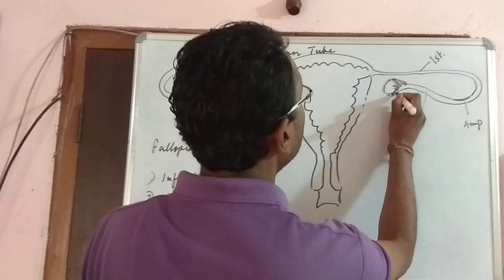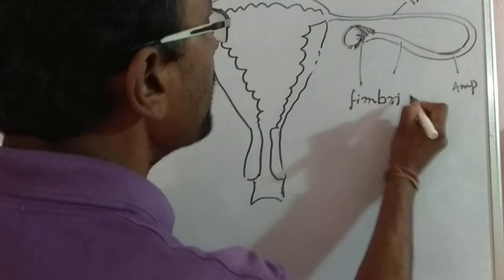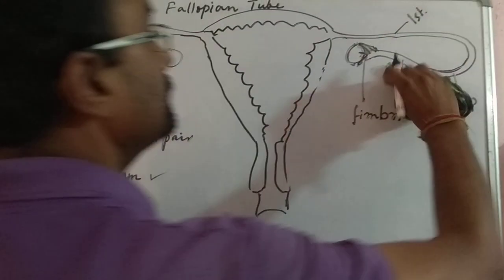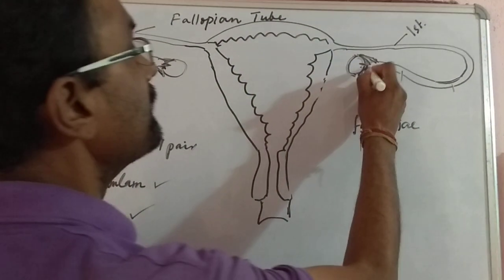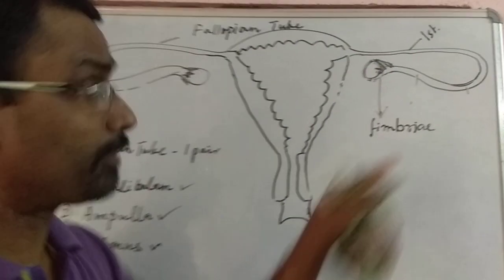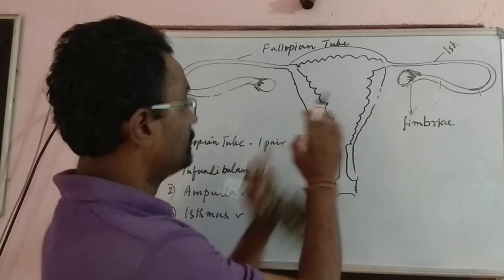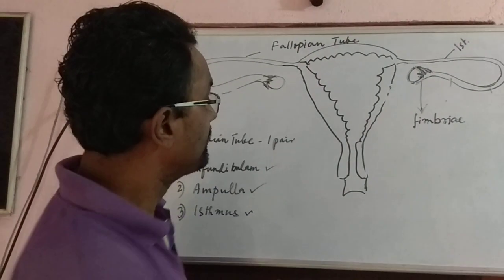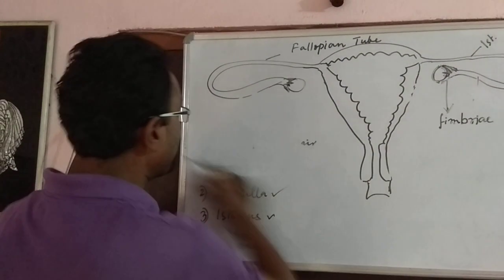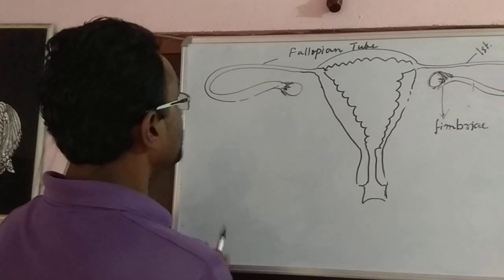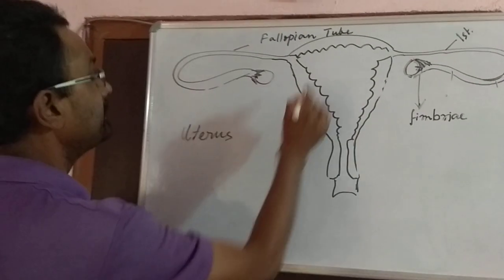The infundibulum has finger-like projections called fimbriae — F-I-M-B-R-I-A-E. Fimbriae are finger-like projections present at the anterior end of the infundibulum. After the fallopian tube, the next most important structure we find is the uterus — U-T-E-R-U-S.